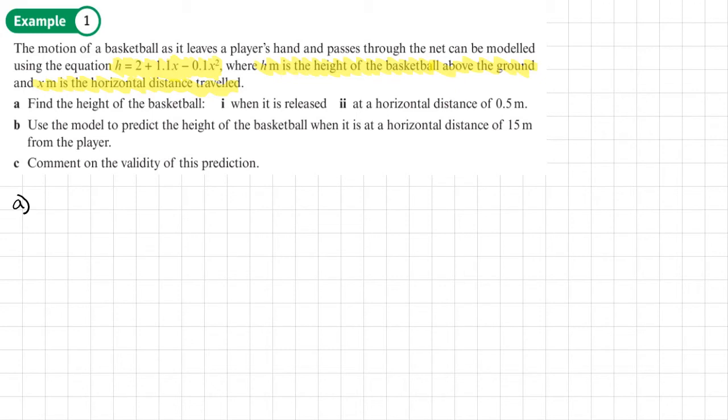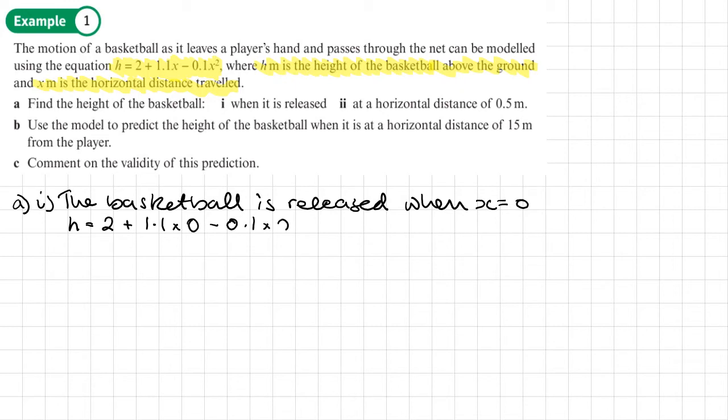Part A has two parts. You want to find the height of the basketball when it's released, and then at a horizontal distance of 0.5 meters. The basketball is released when x is 0, so that's what we put into the equation. H equals 2 plus 1.1 times 0 minus 0.1 times 0 squared. So that just gives the height is 2 meters.